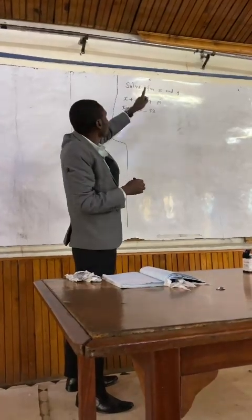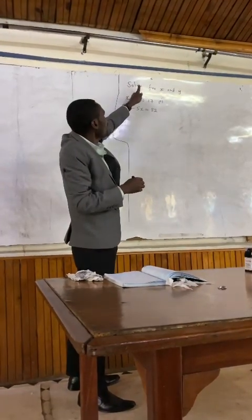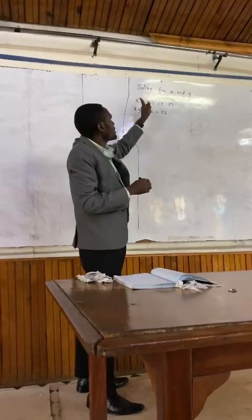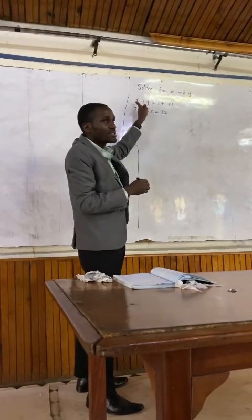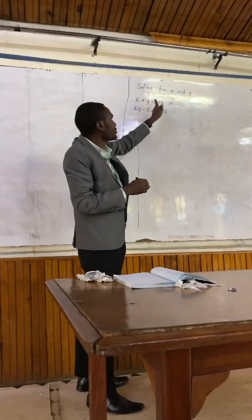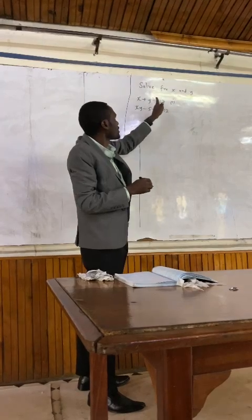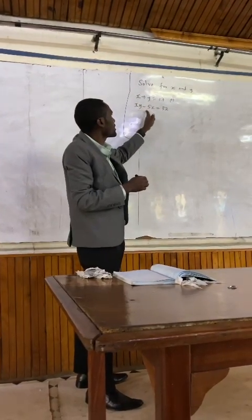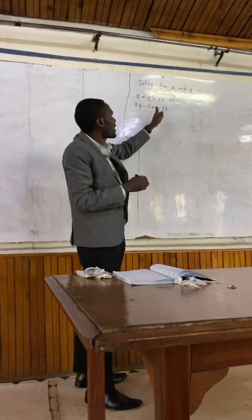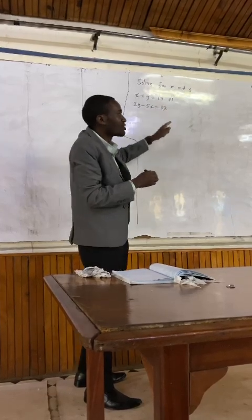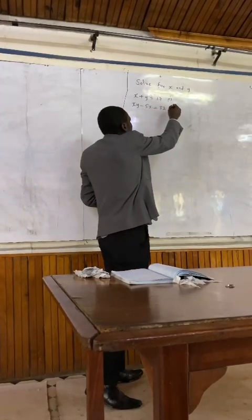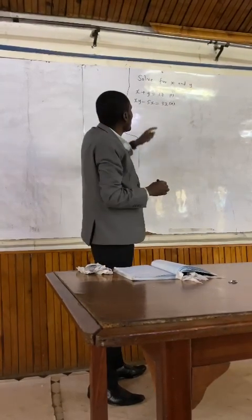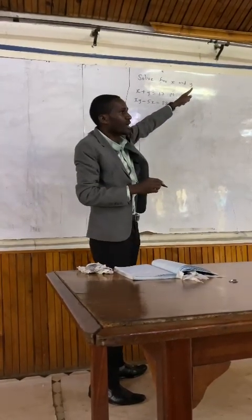The teacher is speaking. Solve for x and y. The first simultaneous equation reads x plus y is equal to 17. The second part of that question reads x times y less 5x, and the answer is supposed to be 32. So that becomes our second simultaneous equation, and you'll be told to solve for x and y.